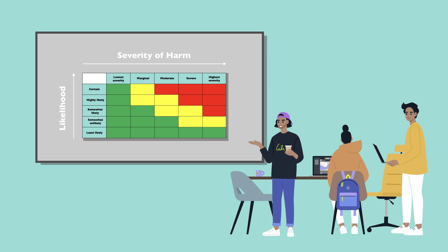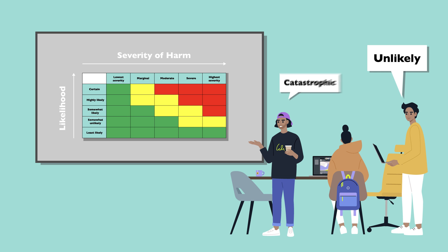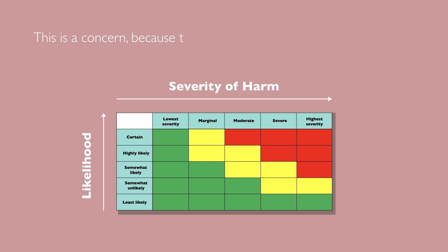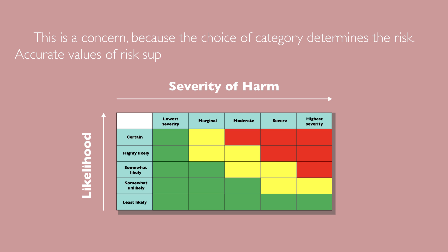Industrial employers have teams to select the categories based, in part, on the category names. Historically, committees have named categories for each dimension without the benefit of scientific studies. This is a concern because the choice of category determines the risk. Accurate values of risk support sound decisions about safety-related actions.